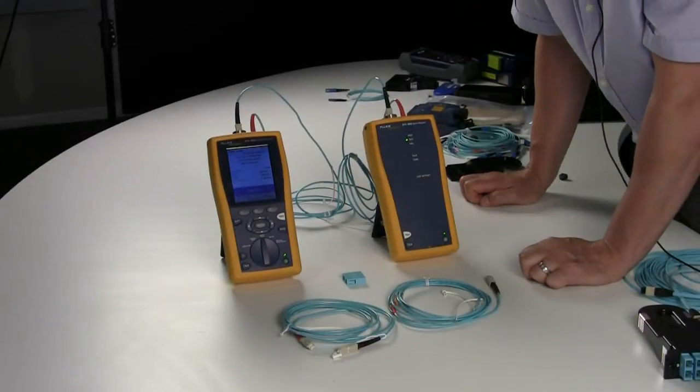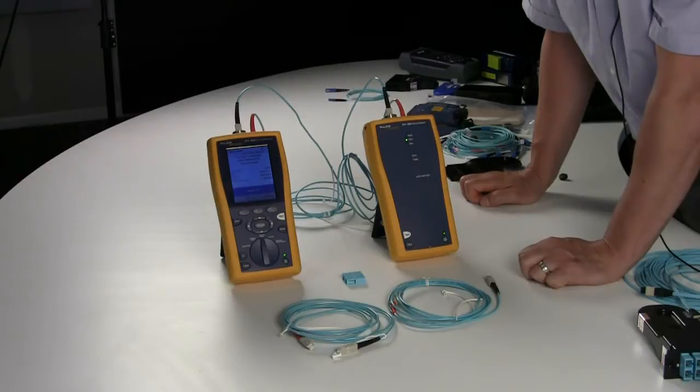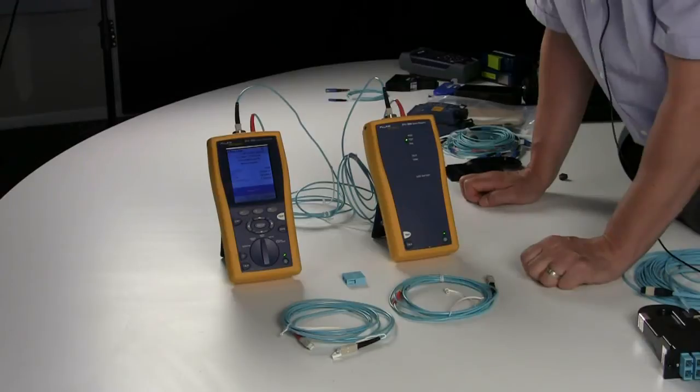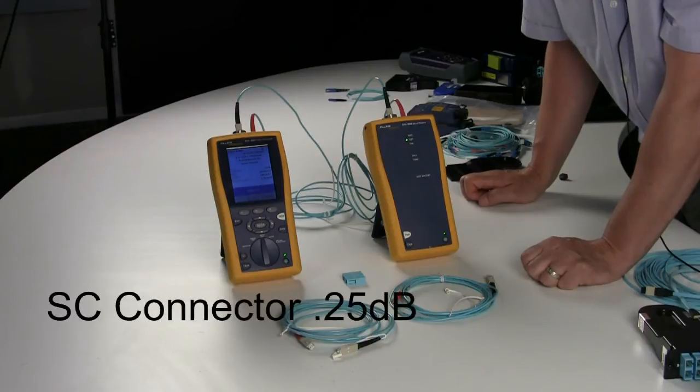After you're setting your reference and you get the value between negative 22 and negative 24, that does not necessarily mean you have a good reference. You need to test your actual reference cords to ensure that the values are within reference grade. The SC value is 0.25 dB.